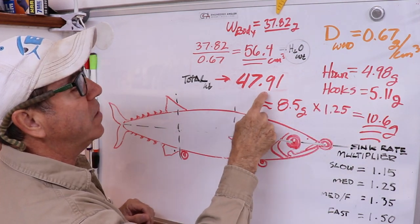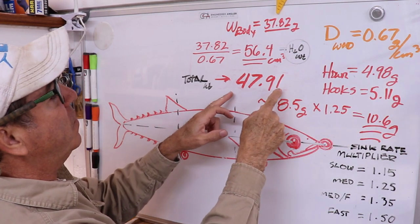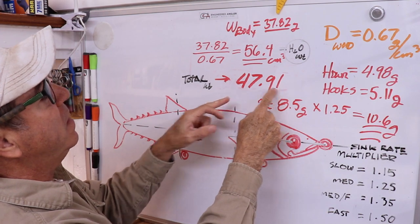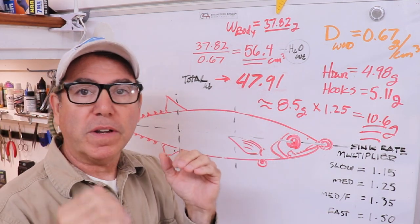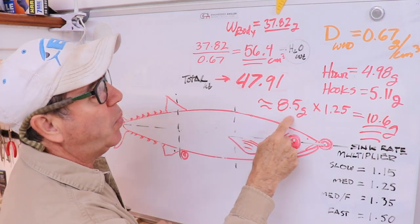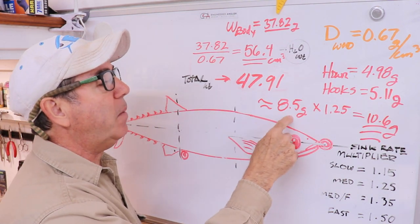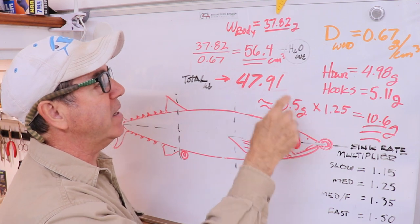By adding the weight of the body plus the weight of the hooks plus the weight of the hardware, I get 47.91 grams. If I subtract 47.91 from 56.4, which is the theoretical amount of weight for it to be suspending, I get 8.5 grams.